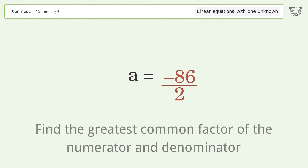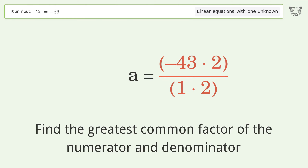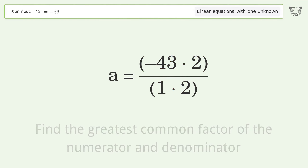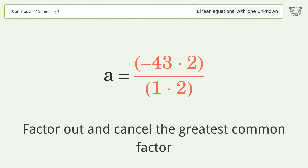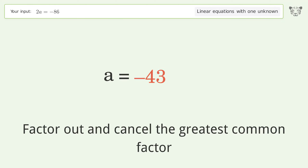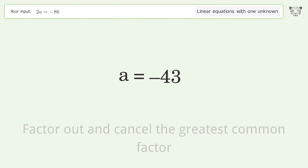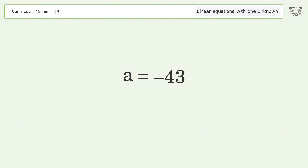Find the greatest common factor of the numerator and denominator. Factor out and cancel the greatest common factor. And so the final result is a equals negative 43.